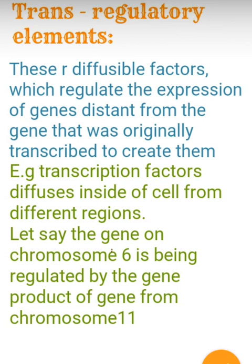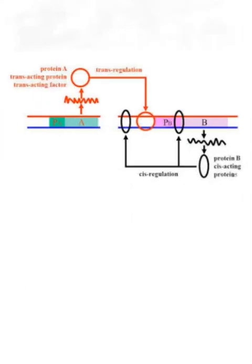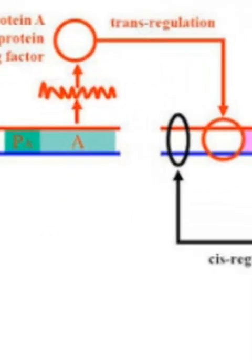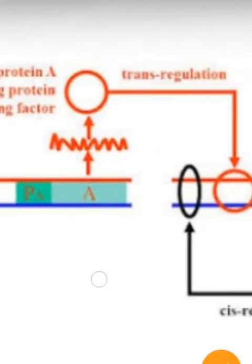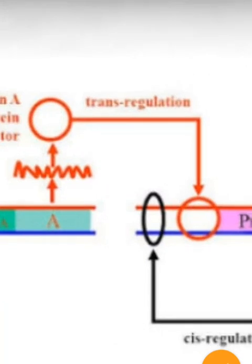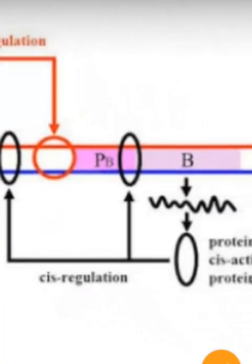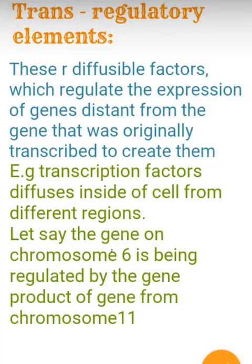Trans regulatory elements are elements which can move from one cell to another — they are diffusible proteins or factors that regulate gene expression. For example, a gene present on chromosome number 6 can maintain the expression of a gene present on chromosome number 11. A protein formed from the gene on chromosome 6 manages the expression of the gene on chromosome 11. All transcription factors are examples of trans regulatory elements.